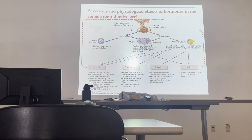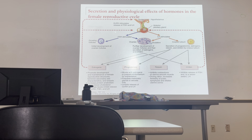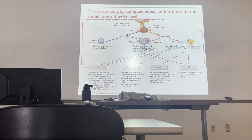Follicle-stimulating hormone stimulates the follicle. LH causes ovulation. There are two cells inside the follicle: the oocyte, and the follicle cells. It's the follicle cells that utilize cholesterol to make estrogen and progesterone. Once we ovulate, the egg is not empty — it's surrounded by some follicle cells called corona radiata, which we'll cover in the next chapter. The ovulated oocyte is arrested at metaphase II of meiosis II.